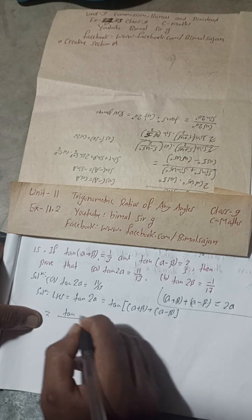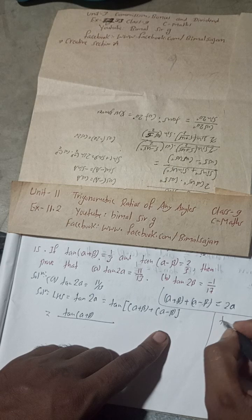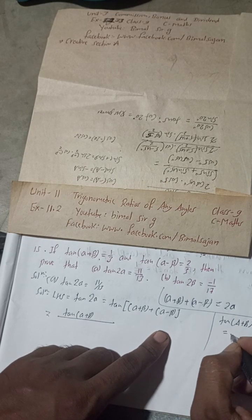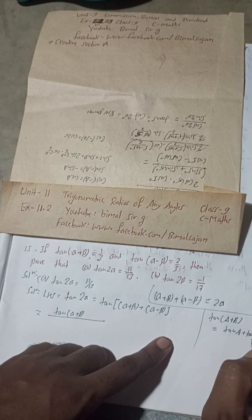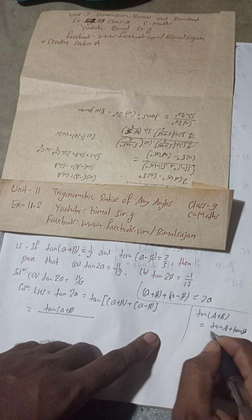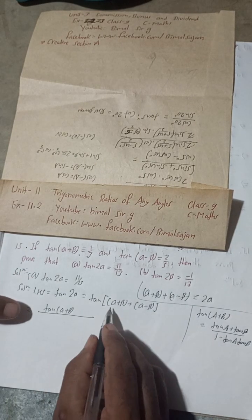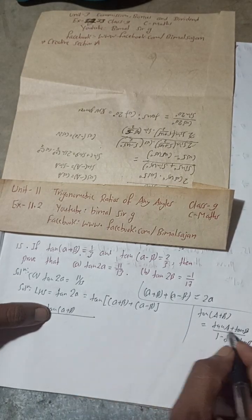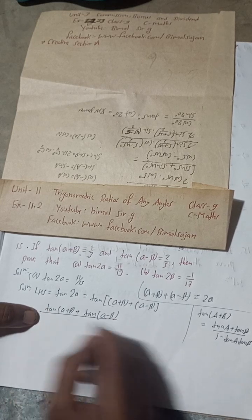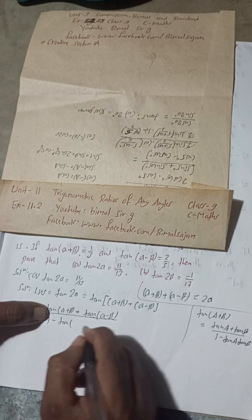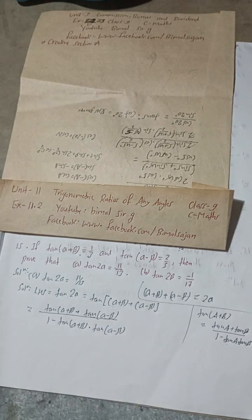The tan(A+B) formula is: tan(A+B) = (tan A + tan B) / (1 − tan A · tan B). Applying this, in place of A we have (α+β) and in place of B we have (α−β). So this becomes: [tan(α+β) + tan(α−β)] / [1 − tan(α+β) · tan(α−β)].